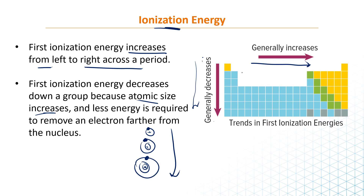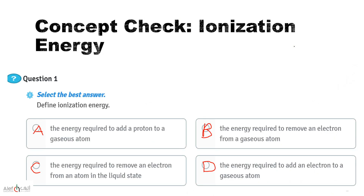When you go to the right, the ionization energy increases because when we go to the right we have more protons — the positive nuclear charge is greater. We will see that in more detail in the next slides.